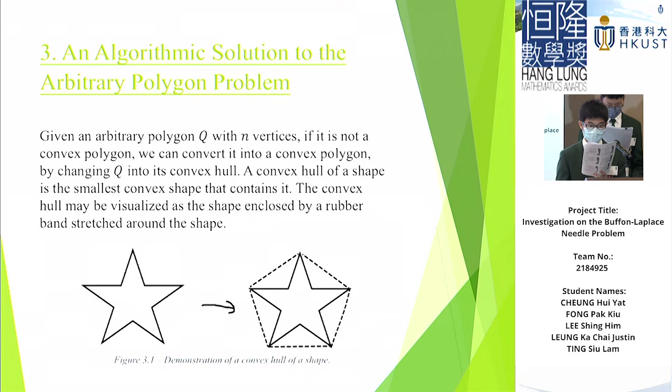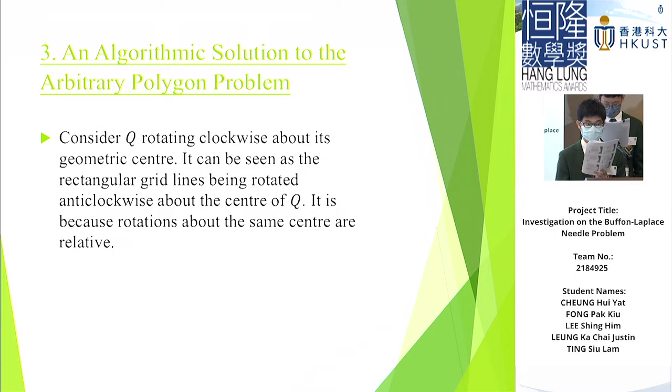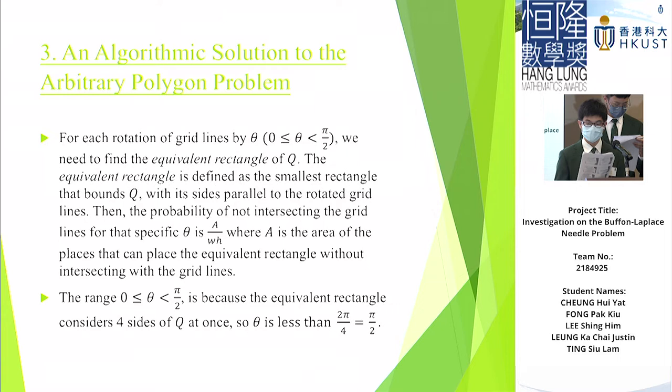Consider Q rotating clockwise about its geometric center. It can be seen as the regular grid lines being rotated anticlockwise about the center of Q. And first, we need to find the equivalent rectangle of Q. It's defined as the smallest rectangle that bounds Q, which is sized parallel to the rotated grid lines, and where theta lies in this range. And this is a demonstration.